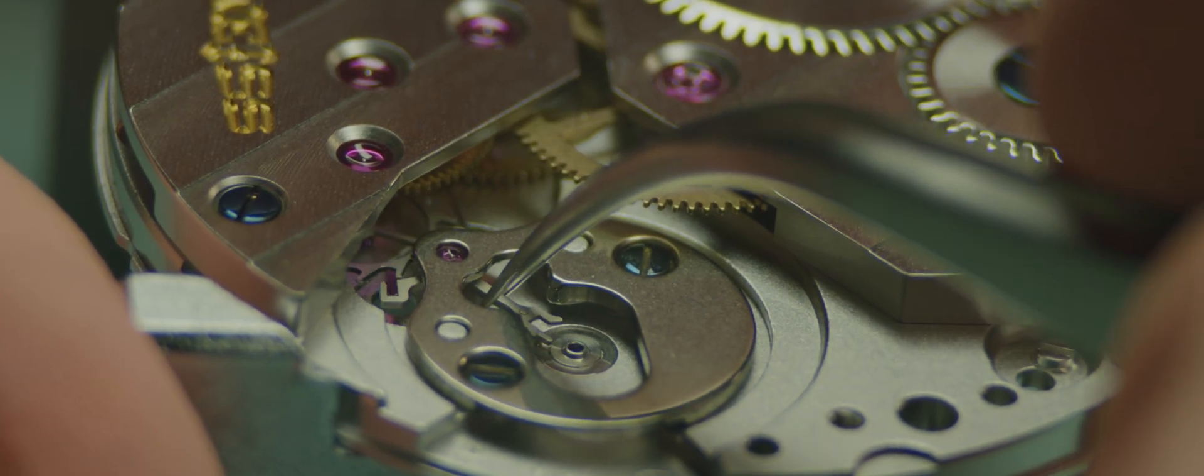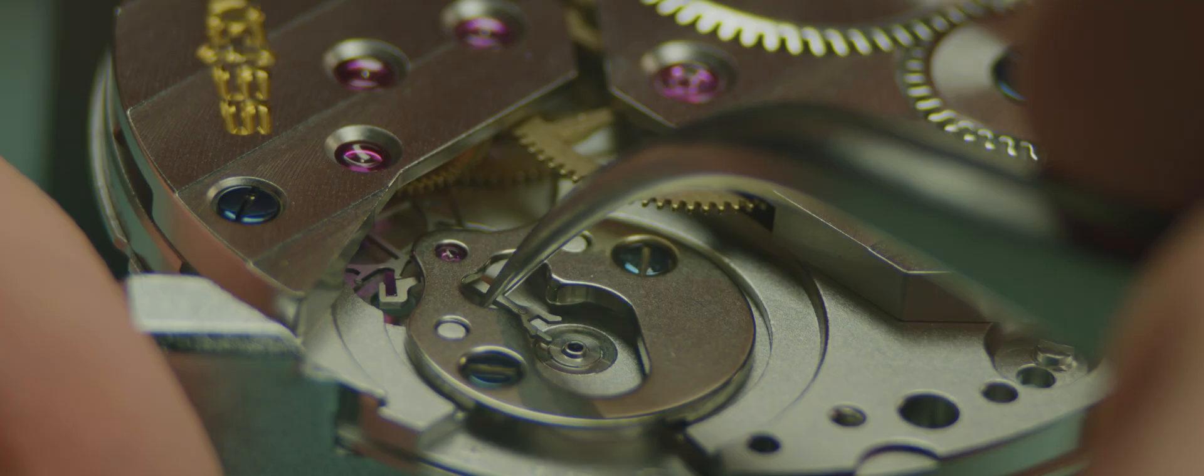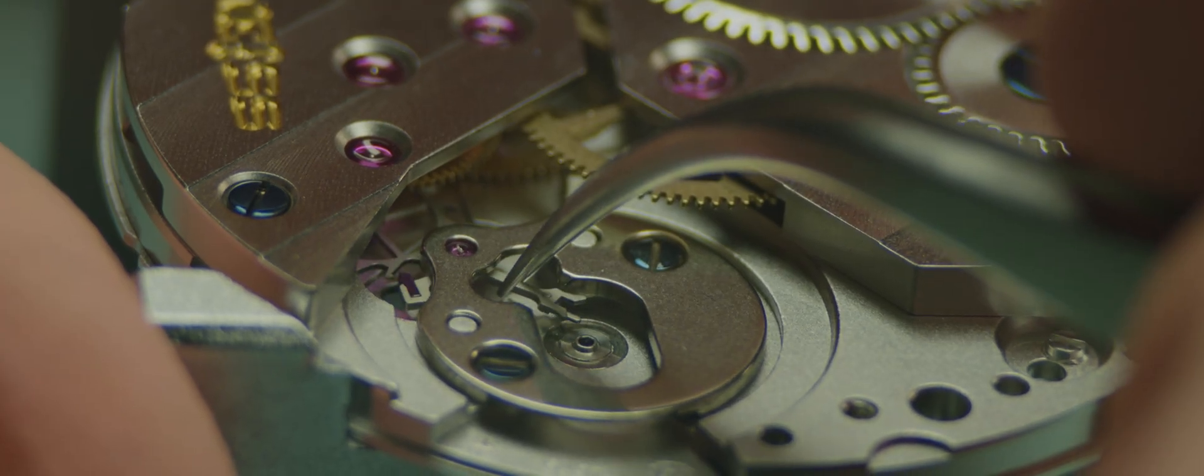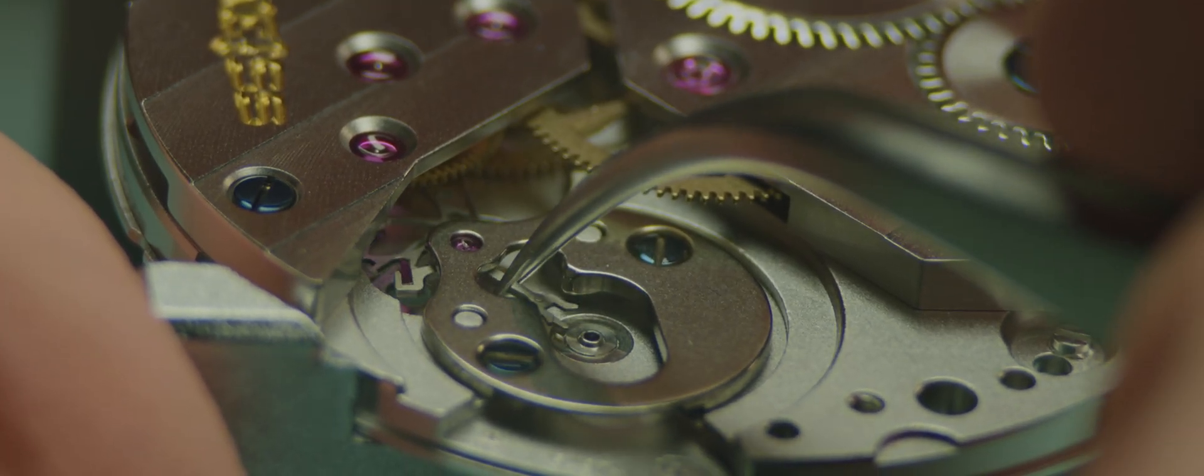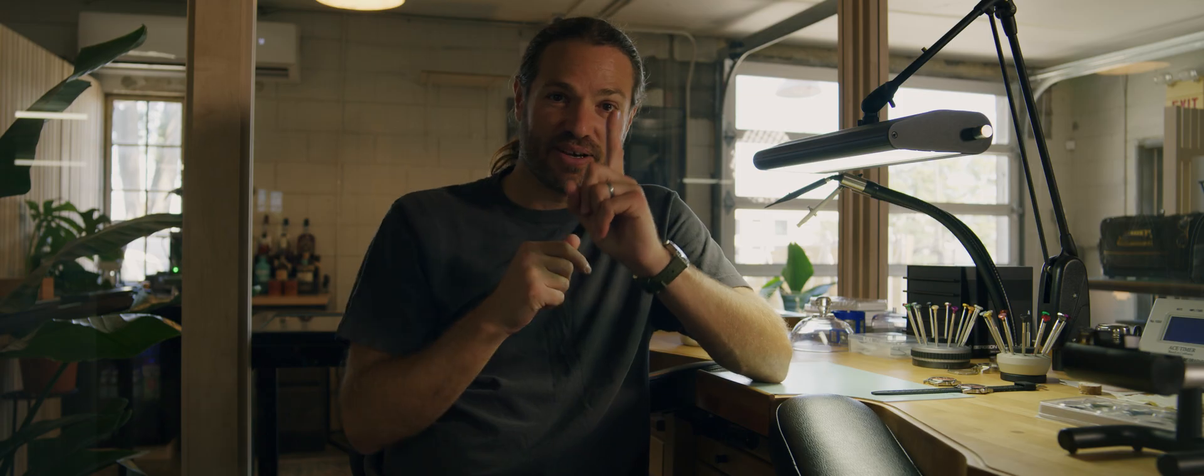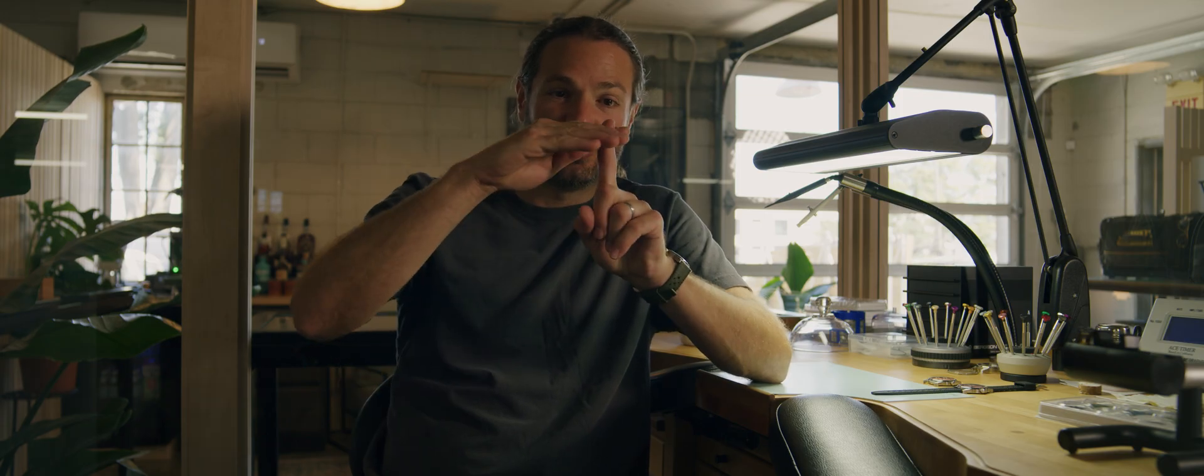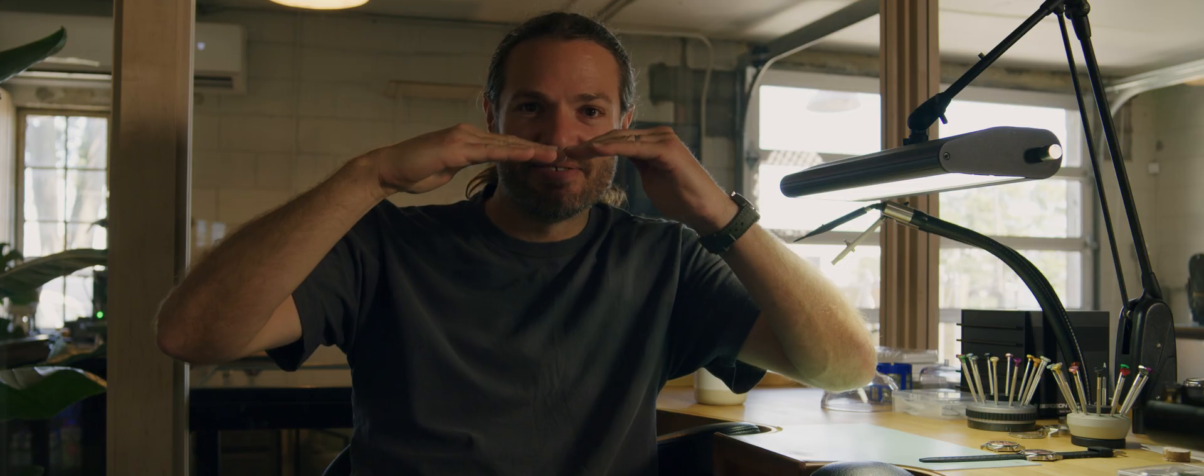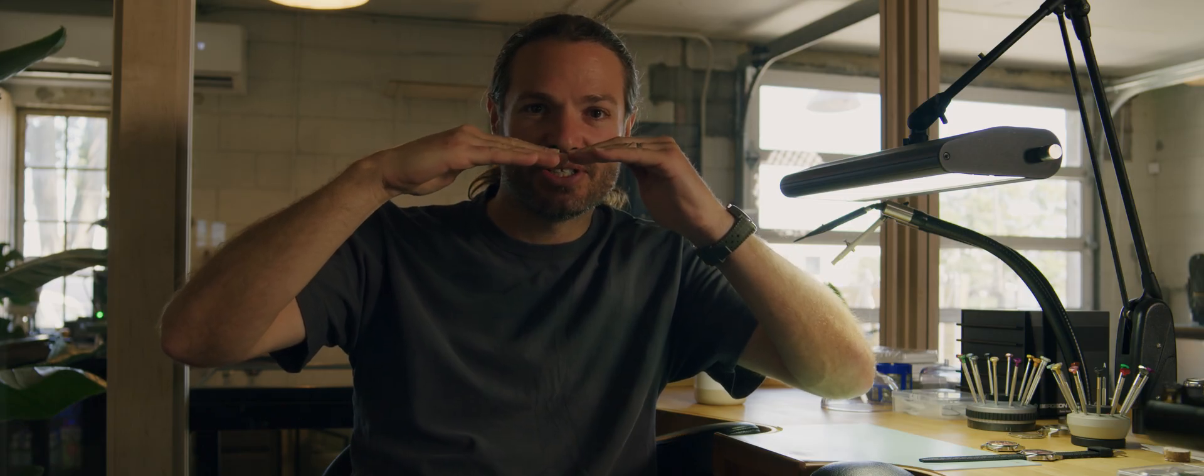The way we actually check the end shake on the pallet fork is by pressing down on the pallet bridge. And when we press down on the pallet bridge, you have the pallet fork pivot in the jewel. As you press down on the bridge, the bridge will deform just a little bit.